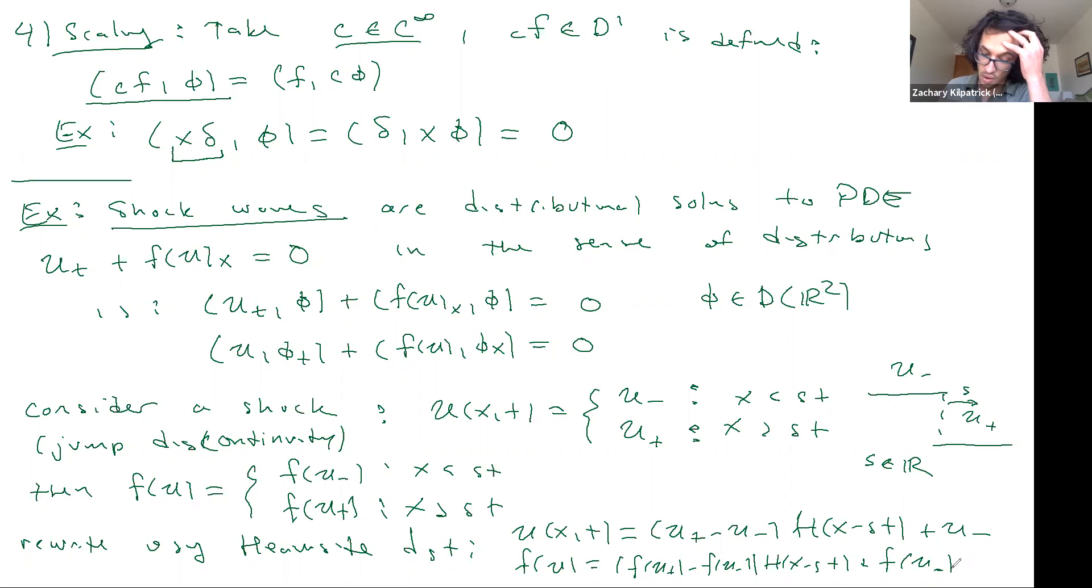So we're getting somewhere. So how do I compute these different quantities now that I have in the PDE that I've written up here?